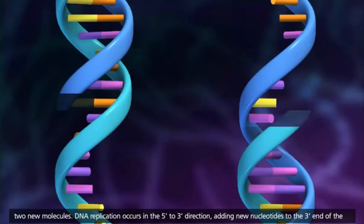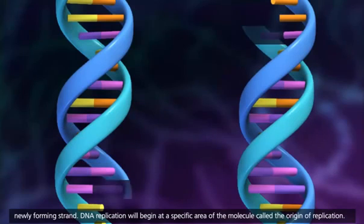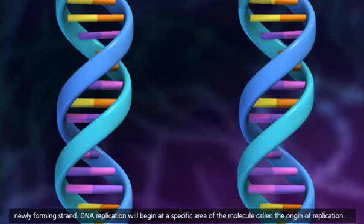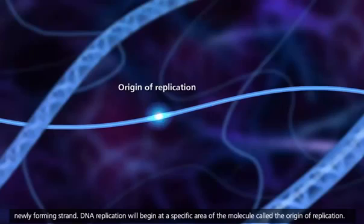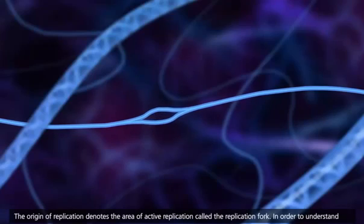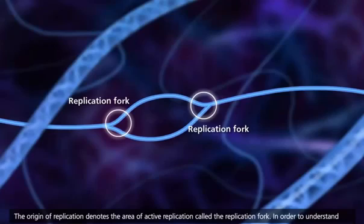DNA replication occurs in the 5' to 3' direction, adding new nucleotides to the 3' end of the newly forming strand. DNA replication will begin at a specific area of the molecule called the origin of replication. The origin of replication denotes the area of active replication called the replication fork.